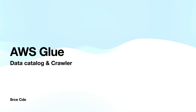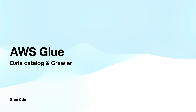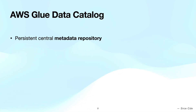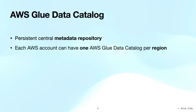Let's start with understanding what AWS Glue Data Catalog is. AWS Glue Data Catalog is the persistent metadata repository to store metadata information, and each AWS account can have only one AWS Glue Data Catalog per region.